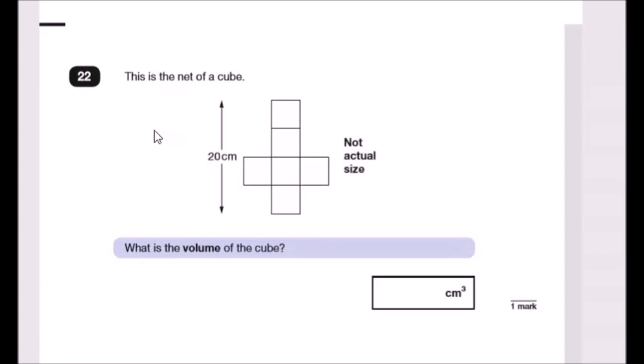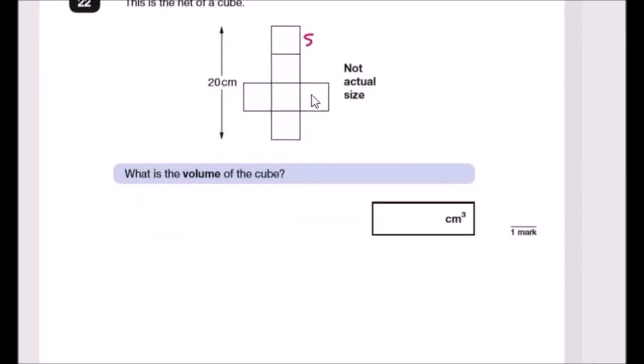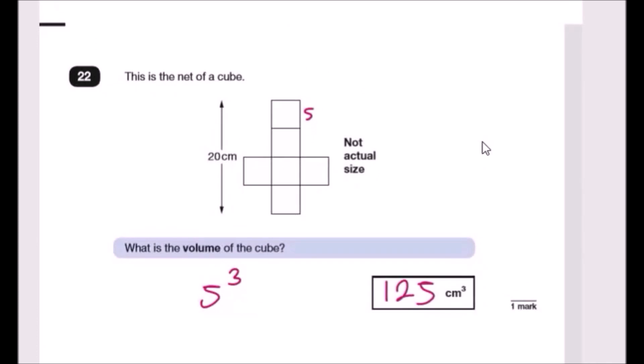Okay, so this is the net of a cube, we've got six faces. The whole system is 20, meaning if you think about it, since you've got four squares divided by four, that means each length is 5. What is the volume of a cube? Well, a cube is basically a perfect square all across, and they all have lengths of 5, so it's going to be 5 cubed, which is 125.